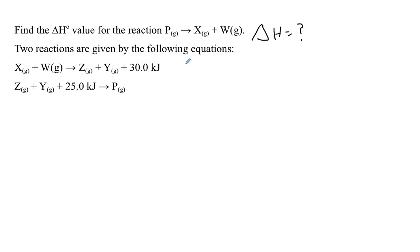What is different about this particular question is we're not given the enthalpy change of the two equations we need to use, but the energy is included as a term. The first thing I'm going to do is pull the energy out into the delta H form. We have 30 kilojoules on the product side or 30 kilojoules released, so the change in enthalpy is negative 30.0 kilojoules for the first one. In the second equation, the change in enthalpy is going to be positive because the energy term is on the reactant side.